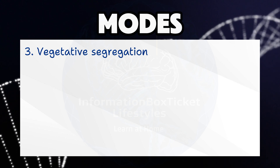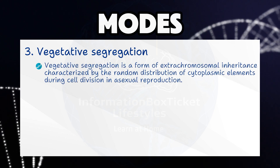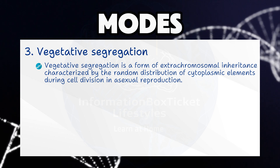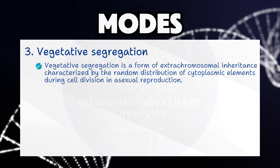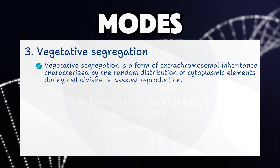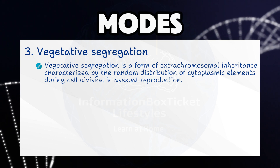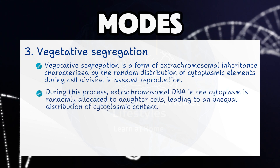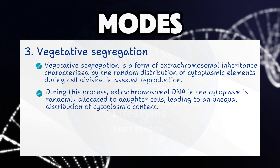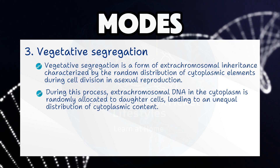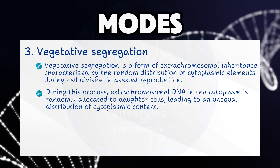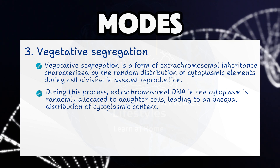Mode 3: Vegetative Segregation. Vegetative segregation is a form of extra-chromosomal inheritance characterized by the random distribution of cytoplasmic elements during cell division in asexual reproduction. During this process, extra-chromosomal DNA in the cytoplasm is randomly allocated to daughter cells, leading to an unequal distribution of cytoplasmic content.